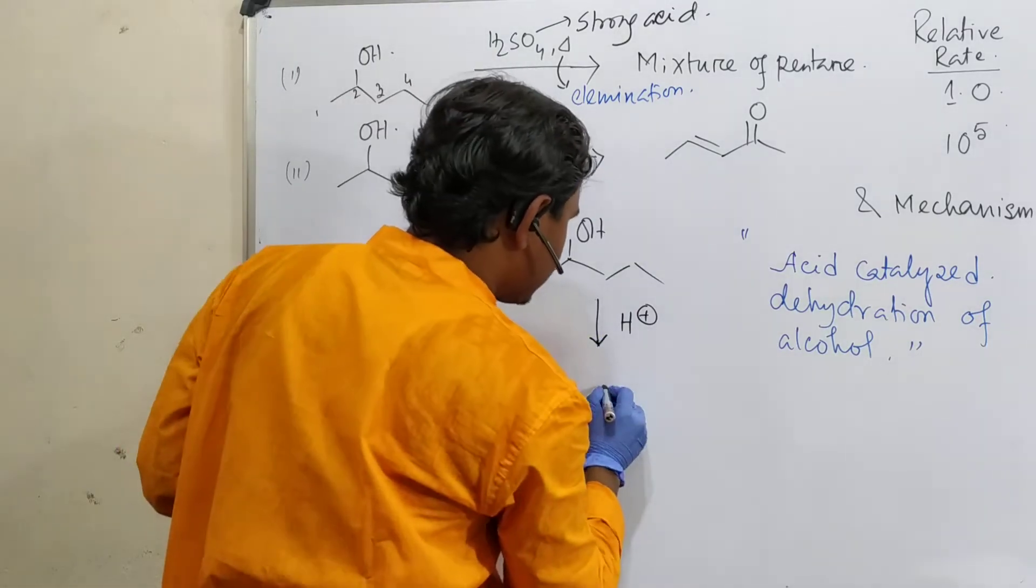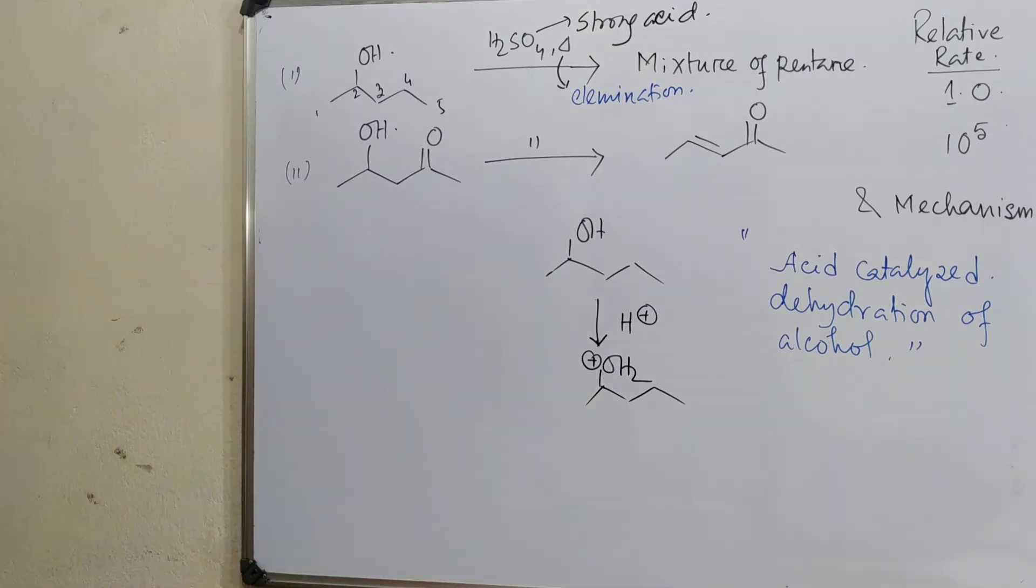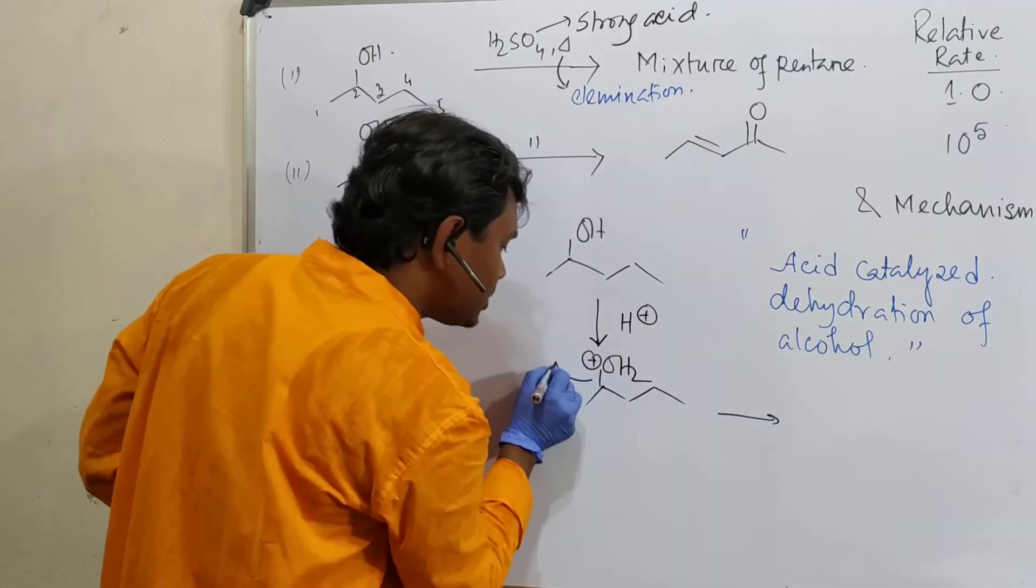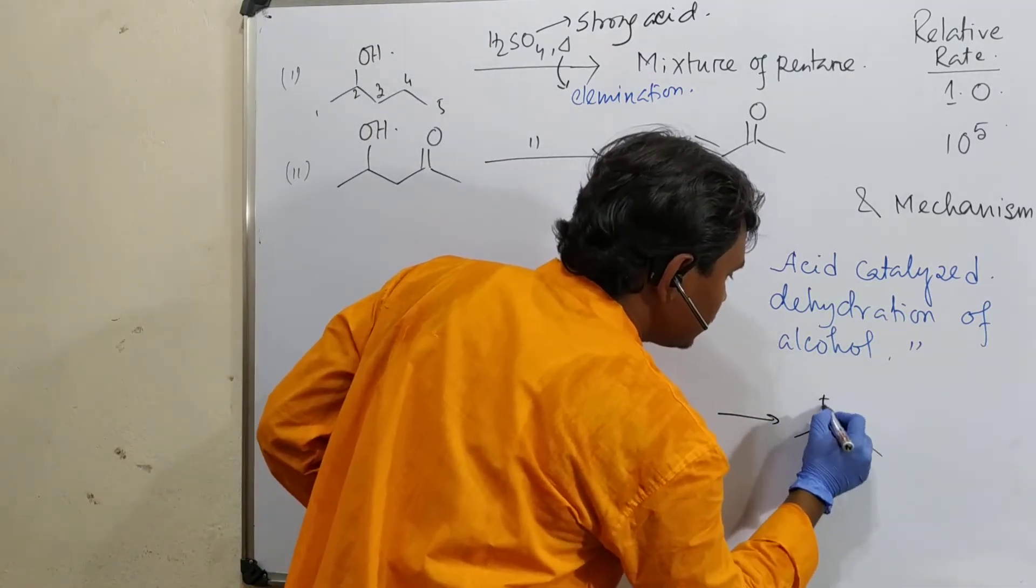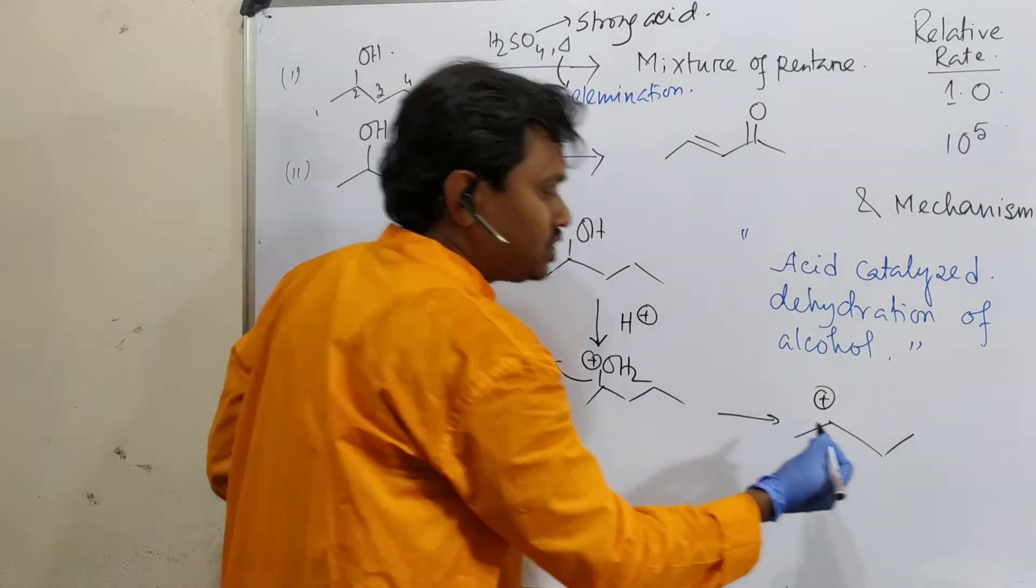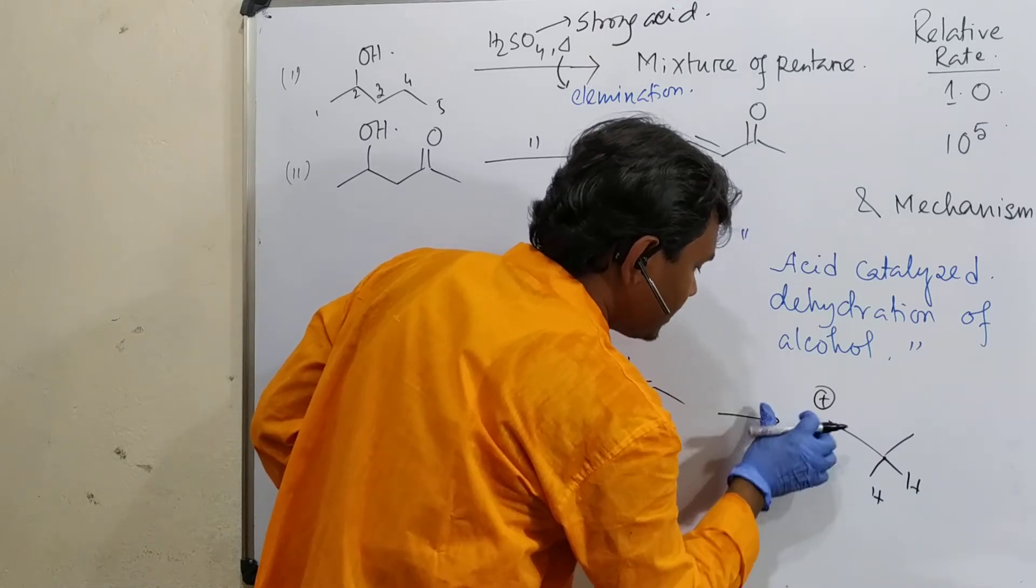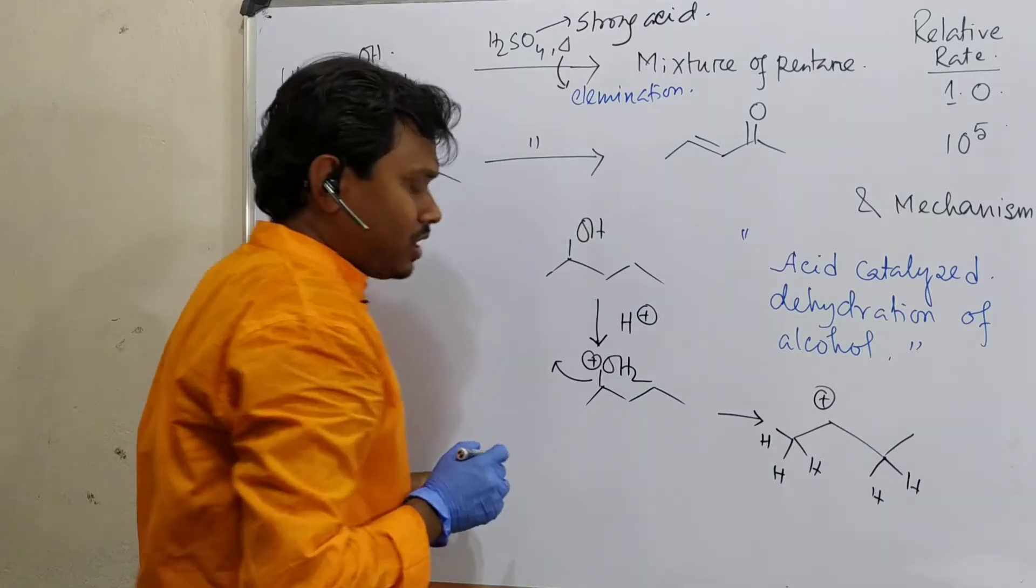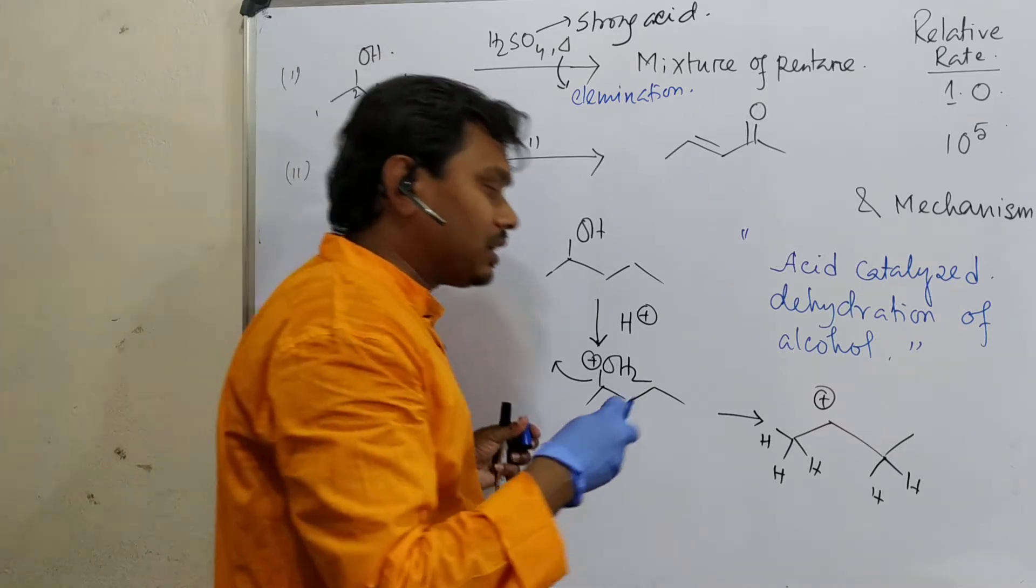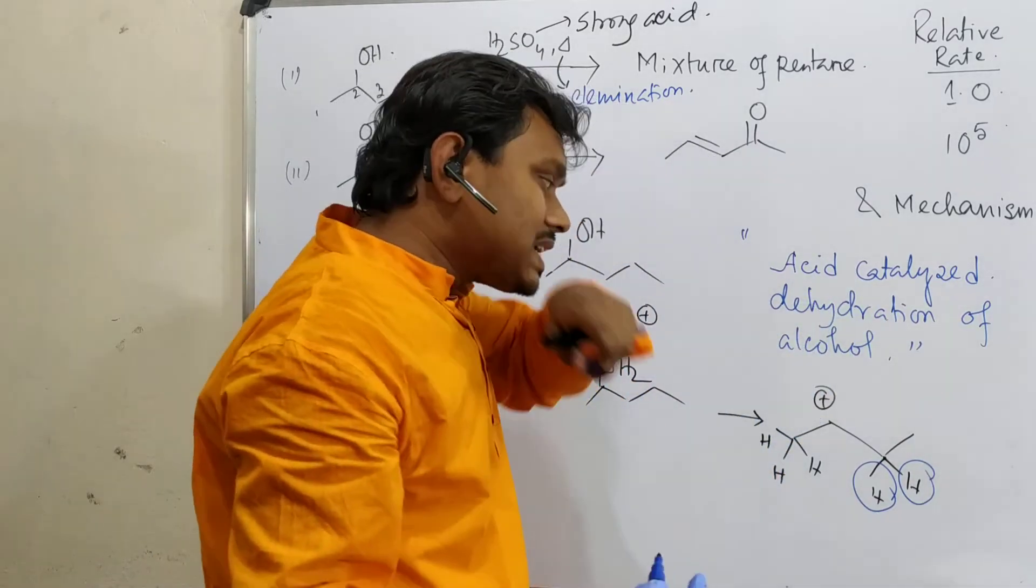After that, what is expected? If you put H plus, because sulfuric acid is a strong acid, and heat is given. Heat favors elimination. You must keep this factor in your mind if you want to solve questions quickly. After that, this becomes OH2 plus, a protonated species. This OH2 will leave to generate the carbocation. Now what can happen? Carbocation, proton could be eliminated. But there are two positions. There are two protons here, but three protons here.